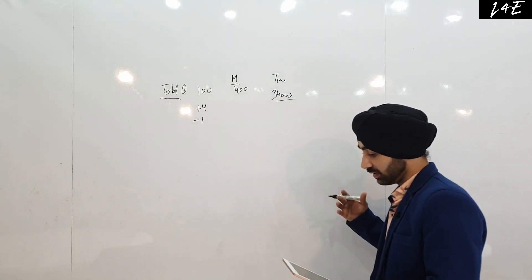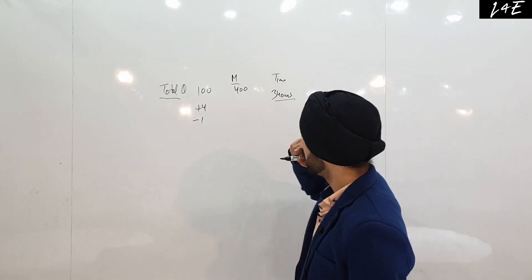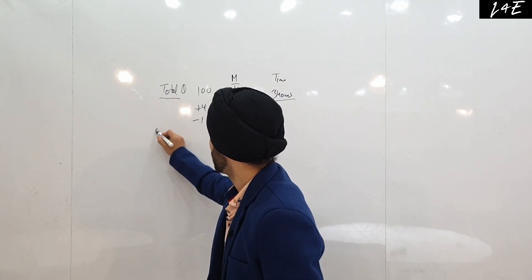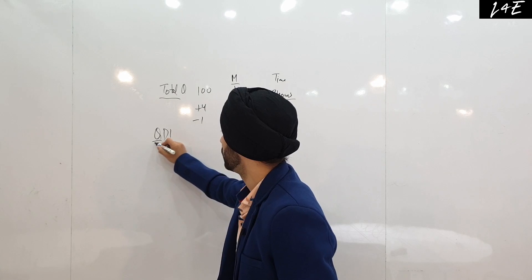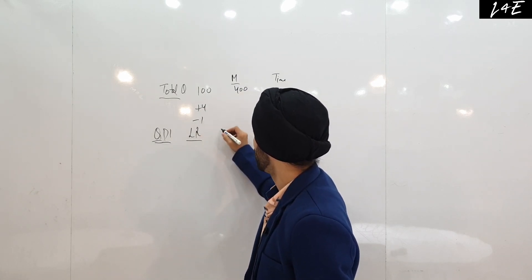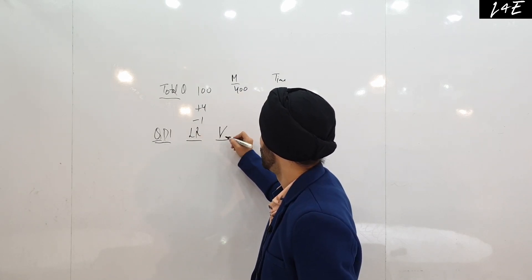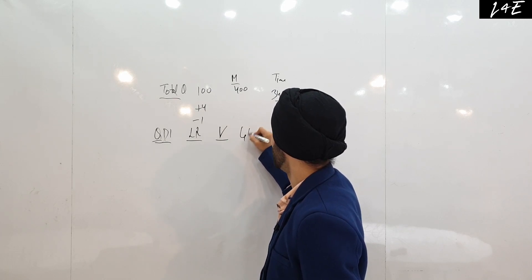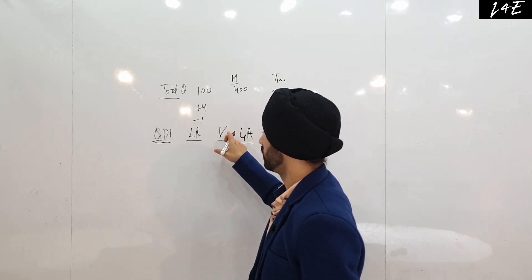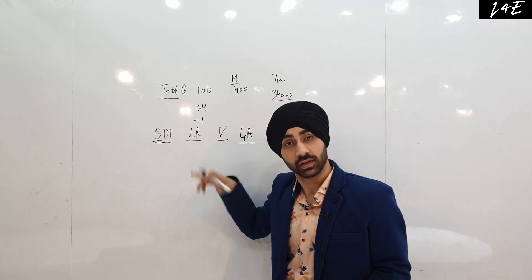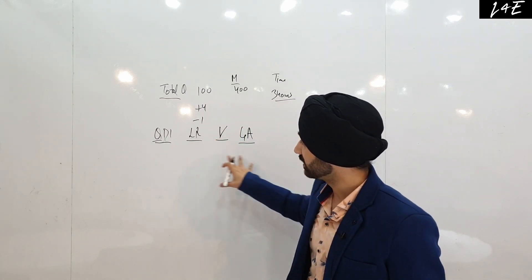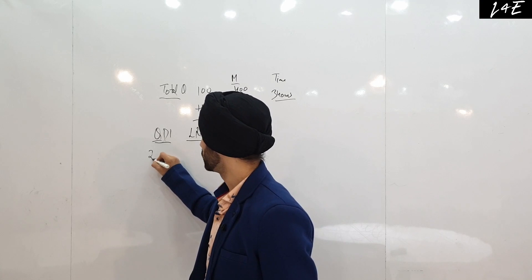Now, talking about whether jumping between sections is allowed — first, let's look at how many sections there are. There are 4 sections: Quant and DI, then the LR section, then the Verbal section, and then General Knowledge. Each section has 25 questions, making a total of 100 questions.